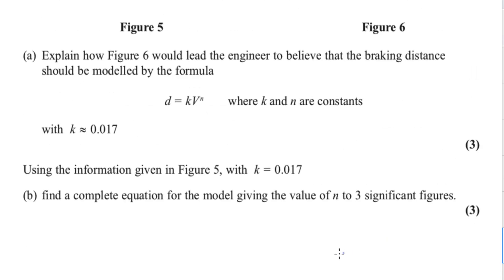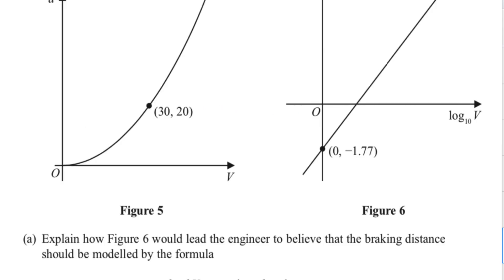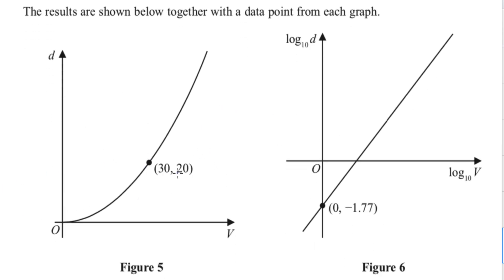In part b they want us to work out the value of n. So to do that we're going to use the fact that this point is marked on. We've got that when v is 30, d is 20.